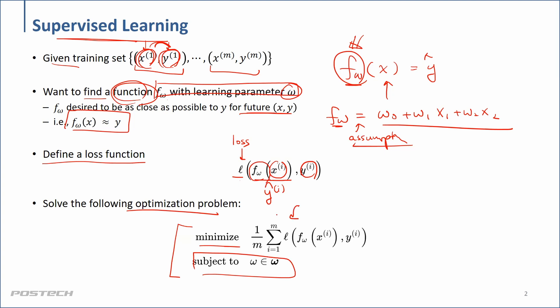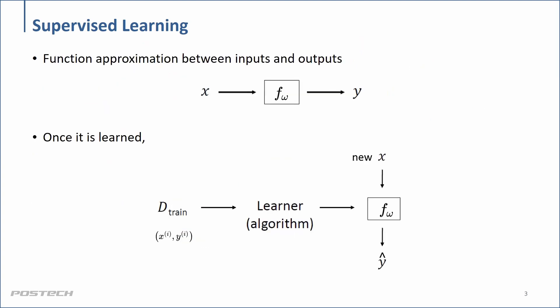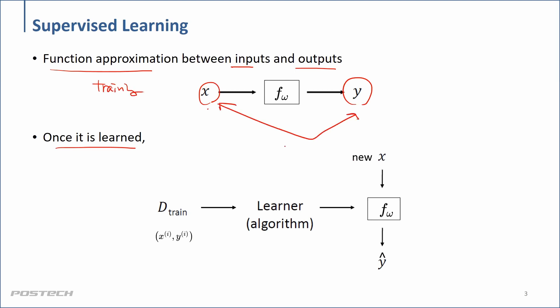This generic expression for supervised learning handles both regression and classification. First, we find a function approximation between input and output during training. Once we've learned f, given a new input x, we want to estimate or predict the output — that's the ultimate goal of either classification or regression, which we call supervised learning.